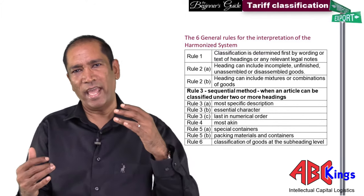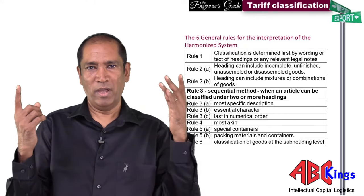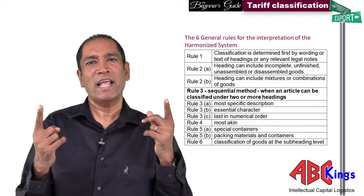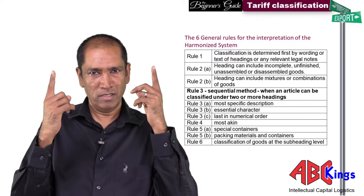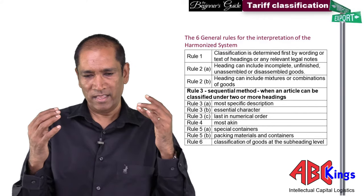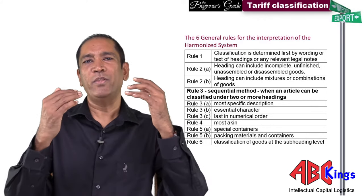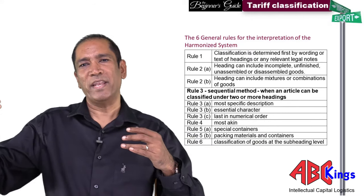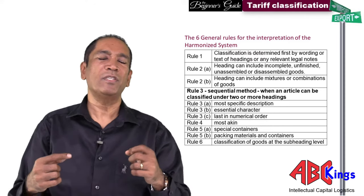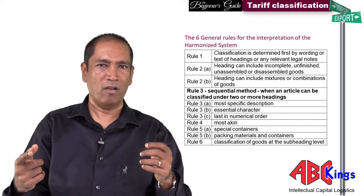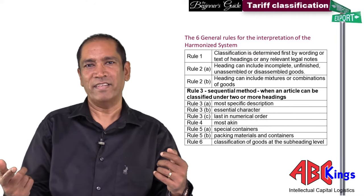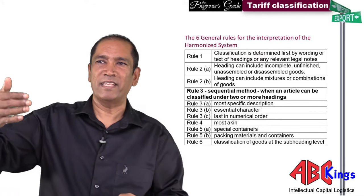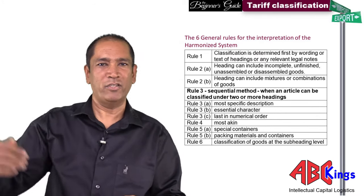Under rules 3A, 3B, and 3C, if a product is still classifiable within two tariff headings, the rule is that you use the tariff heading that appears in the last numerical order. In choosing the last numerical order, classifiers are asking you to choose the tariff heading that is highest in the value chain.